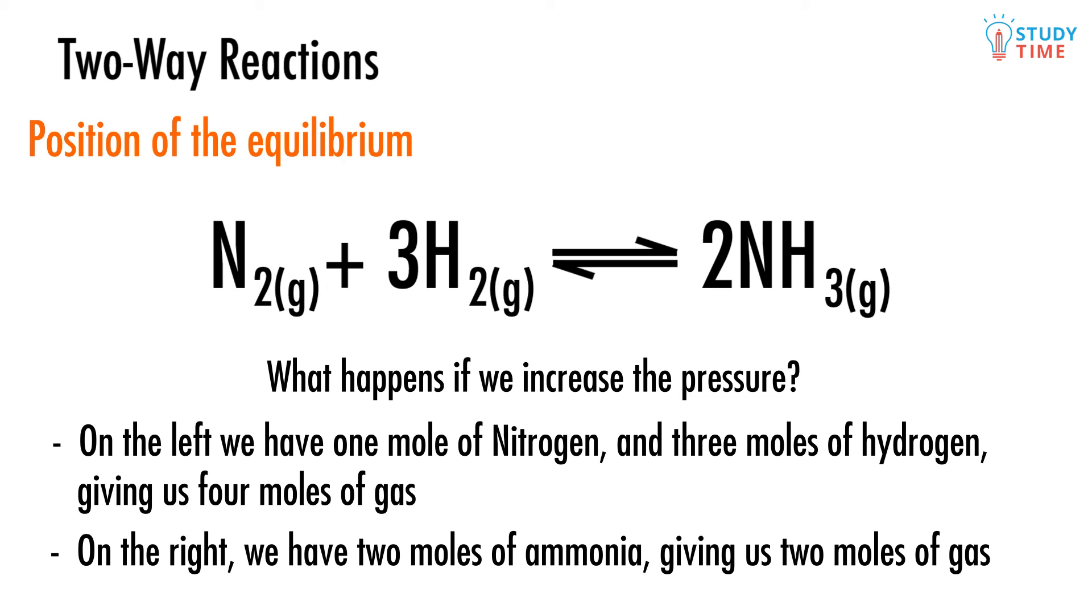Clearly then, if we reduce the pressure of the system, the reaction's equilibrium will shift to favor the left hand side, which has more moles of gas. Remember the equilibrium wants to oppose any change we make, and more moles of gas will increase the pressure within the system.